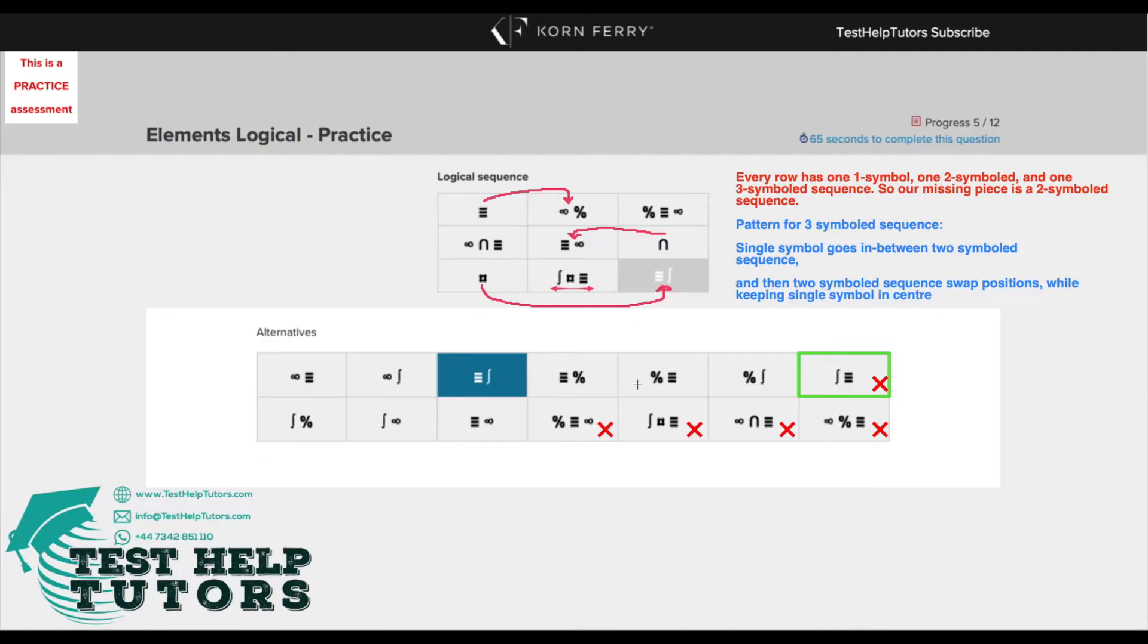So what this tells us is that we can immediately eliminate these three symboled options here on the bottom and we just have to focus on the two symboled options given to us.